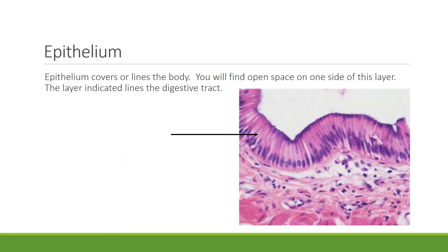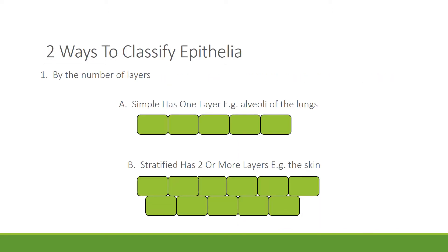The first tissue is epithelial tissue, which covers or lines organs. We're looking here at a layer of the digestive tract — you can see the arrow pointing to the layer of epithelium that lines it. There are two ways to classify epithelia. The first is by the number of layers. If there's one layer, it's known as simple epithelia, an example being the alveoli of the lungs. Stratified epithelium has two or more layers — an example is the skin — and is usually found in areas of high friction.